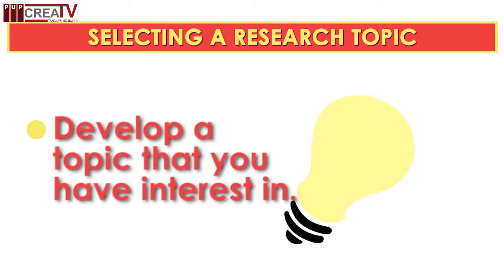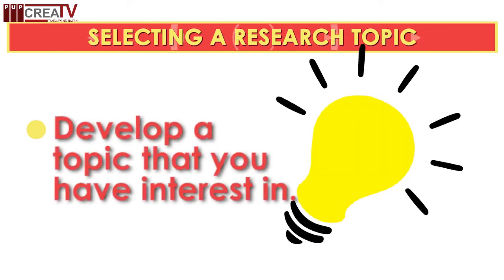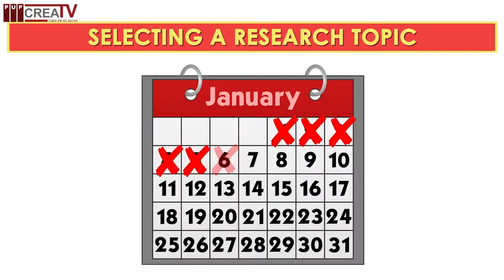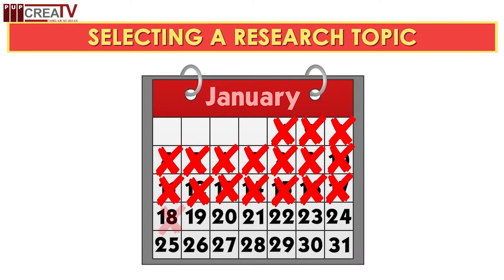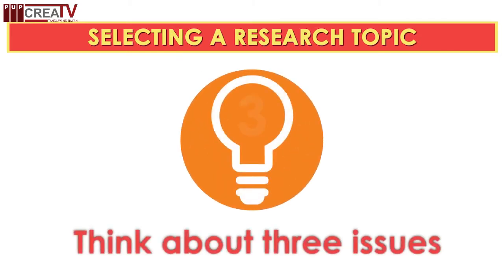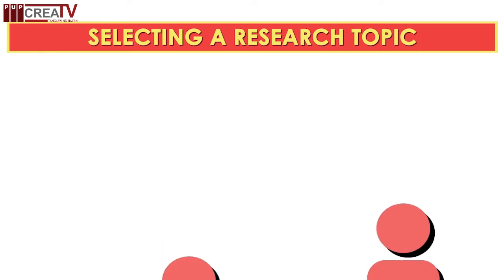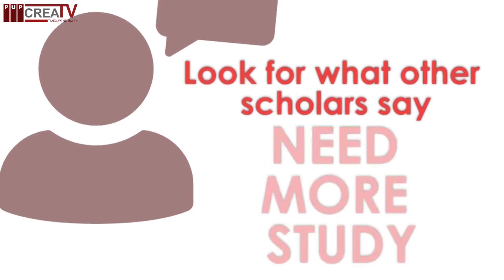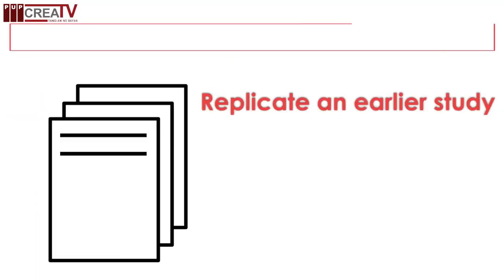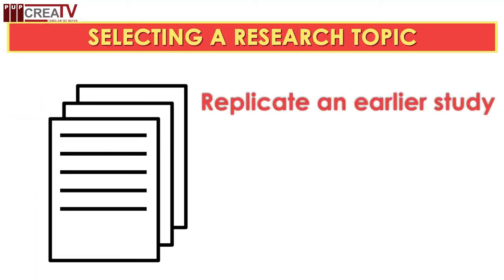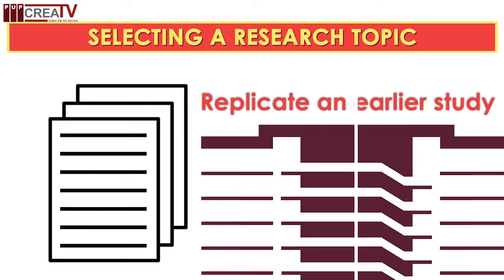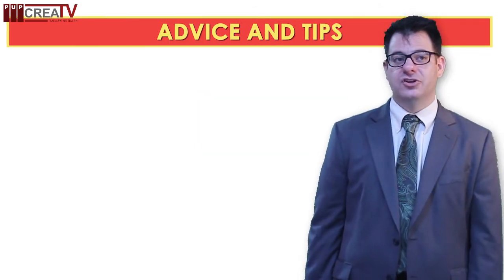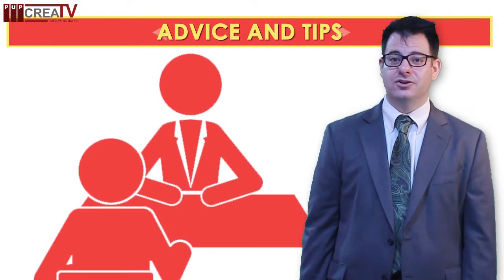In selecting your topic, you should develop a topic that you have interest in because you'll be working with this topic for several months or over the course of a year perhaps. Think about three issues you want to study and turn them into questions. These are things you can discuss with your group, your advisor, or others in your discipline. You should see what other scholars have to say needs more study. You can also replicate an earlier study within what's acceptable in your discipline and your university.